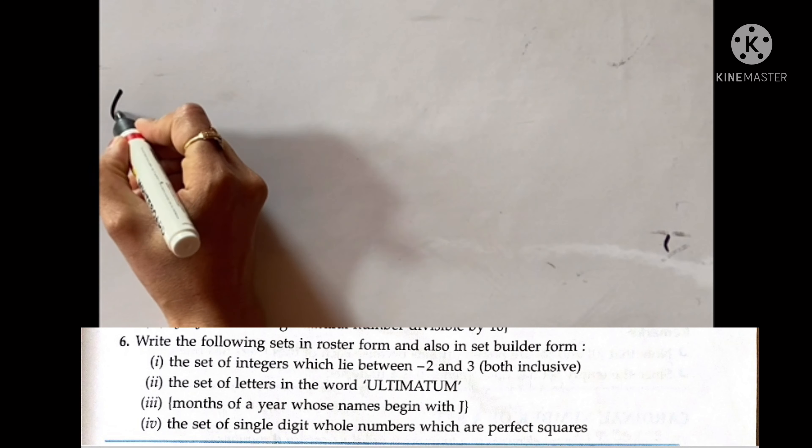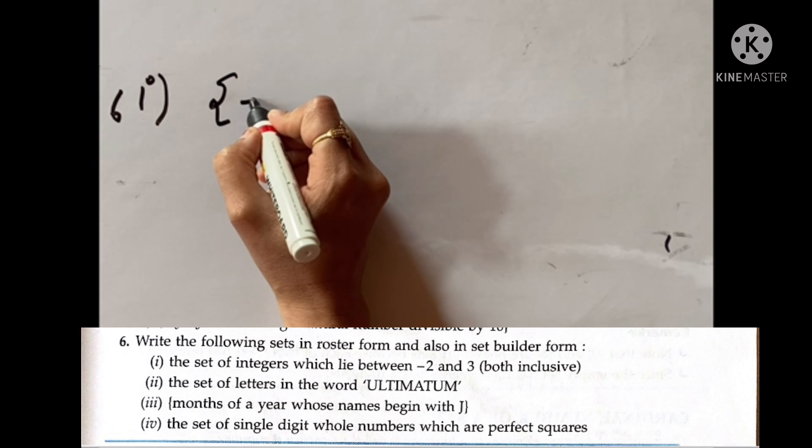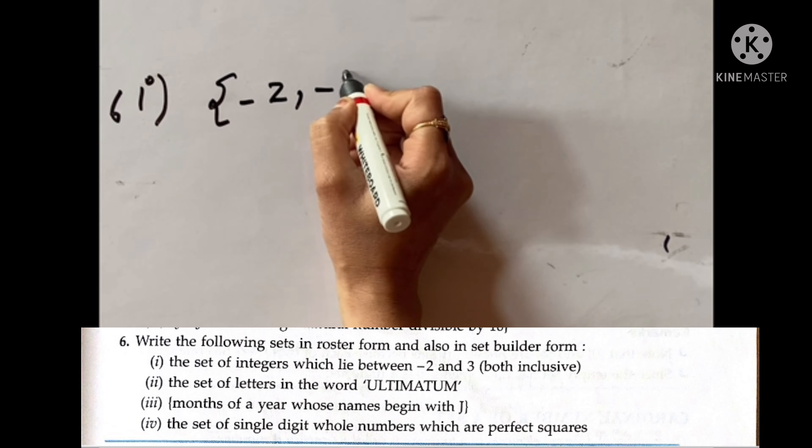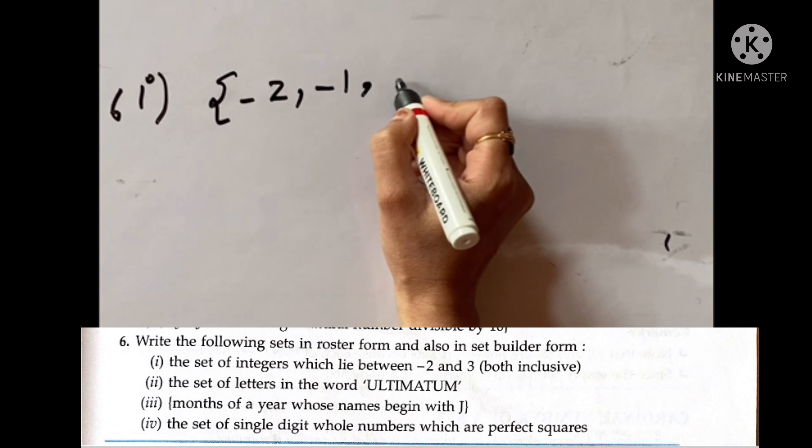Now minus 2 and 3. So it will be minus 2, minus 1, 0, 1, 2 and 3. All separated by commas and put inside the curly bracket. So this is your tabular form.